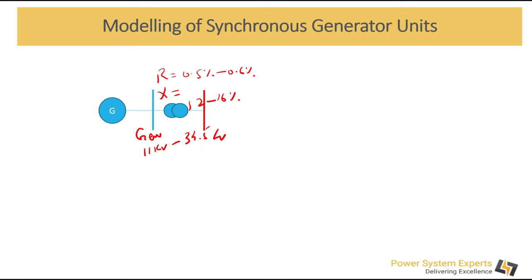R is going to be something around 0.5 to 0.6 percent — these are the typical values used. If these values are not available and you are doing a generic study, you can use these limits. Moving on, we are going to have the interconnection system — this can be the cable connected to the point of connection or your high voltage or extra high voltage connection. All you need are your R, X, and B values.